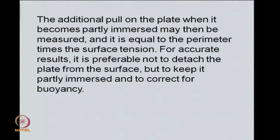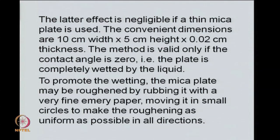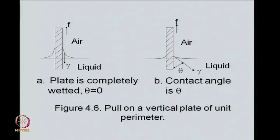Once again there are certain guidelines for achieving more accurate results. It is preferable not to detach the plate from the surface, but to keep it immersed partially in the liquid and make corrections for buoyancy. You measure what pull is required to make this plate coming out of the liquid, but actually not snapping off from the surface, rather allow for corrections related to buoyancy. And this latter effect also can be made negligible if you suitably choose the mica plate. A very thin mica plate with the dimensions such as 10 centimeter width, 5 centimeter height and 200 of a centimeter in thickness may be adequate to minimize the correction by buoyancy.